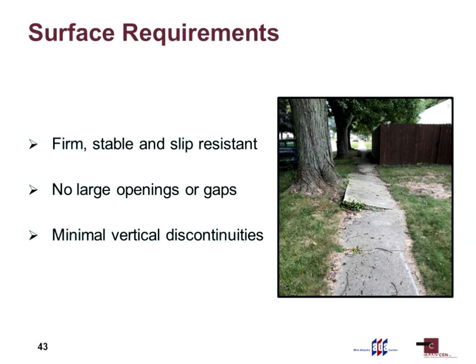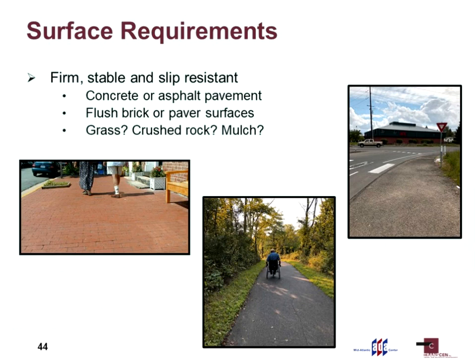The surface requirements for pedestrian access routes are firm, stable, and slip resistant — somewhat vague without measurable guidance. There are some devices under development for firmness. Stable means it stays in place. Slip resistant means that when it gets wet outside, it shouldn't be slippery to walk on. There should also be no large openings or gaps and minimal vertical discontinuities.